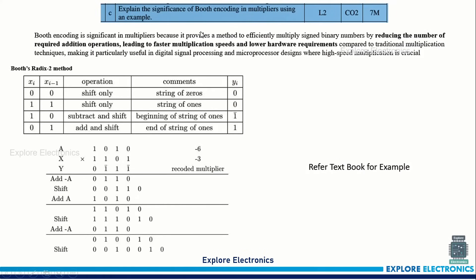The third question: explain the significance of booth encoding in multipliers using an example. Booth encoding is explained for the radix-2 method. If radix-4 method is required, please search online or refer to the textbook. An example using six and three for multiplication is taken, showing how the shifting and subtraction will be done. The significance to highlight is: reducing the number of iterations, faster multiplication, and lower area requirements can be achieved using booth encoding.